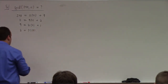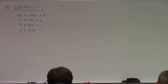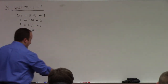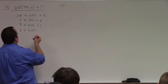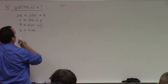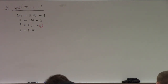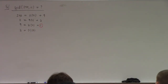The last non-zero remainder is the GCD. So the GCD of 240 and 11 is 1 — these numbers are relatively prime. You know this because you have some sense of prime factorizations.